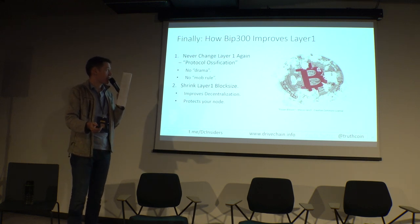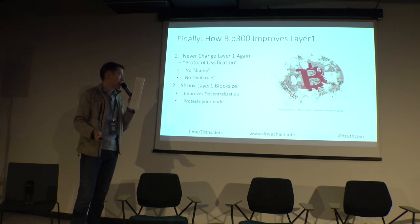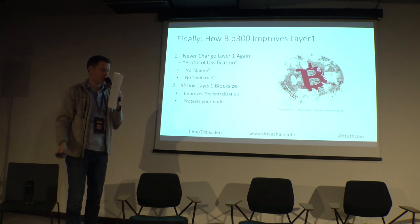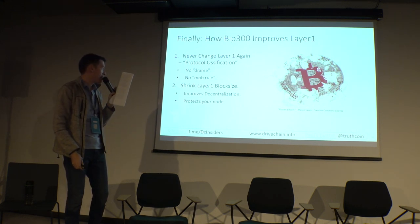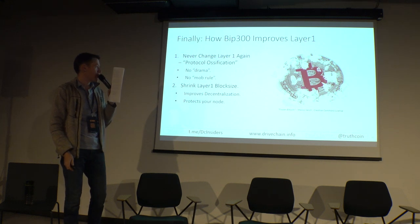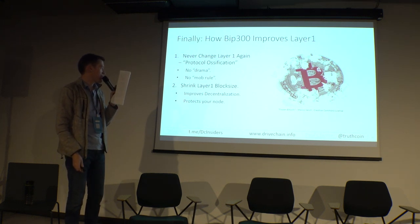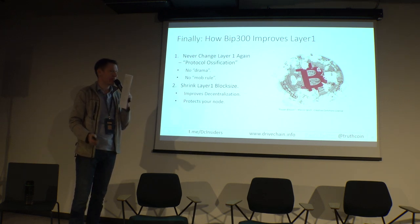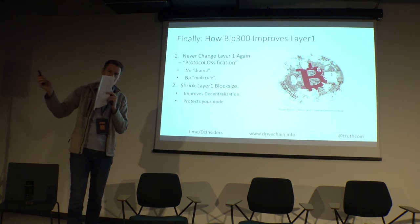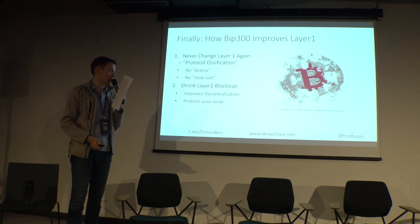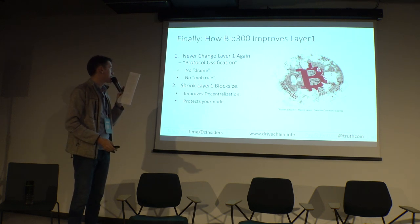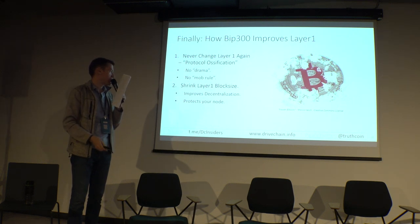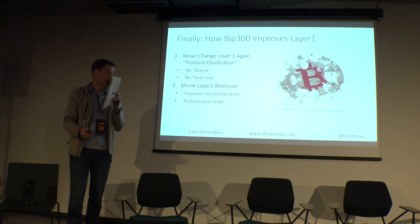We could also improve layer one by having all this extra throughput on the upper layers. You don't need layer one to do as much transaction volume, so you can shrink the layer one block size and ossify the code, because all development creativity would move up to the next layer, and you'd no longer need to worry about what to activate on layer one.